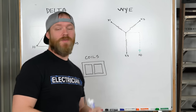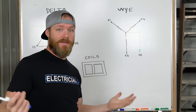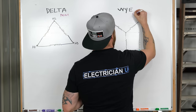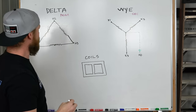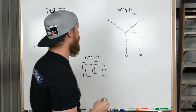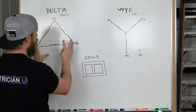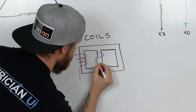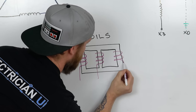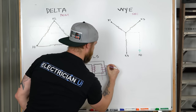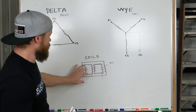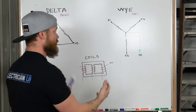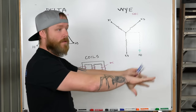Without going too deep, let me illustrate the difference between delta and Y. We've got a transformer with a delta primary and a Y secondary. What delta and Y means is that there are three coils inside of a transformer. So we've got coil one, coil two, and coil three — this is our secondary. These coils together are wired a specific way so they get a certain amount of voltage out of them and provide a neutral when we get power out to our load.